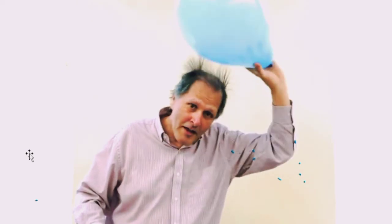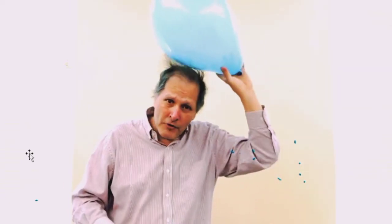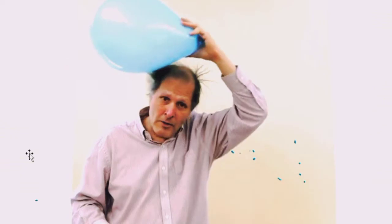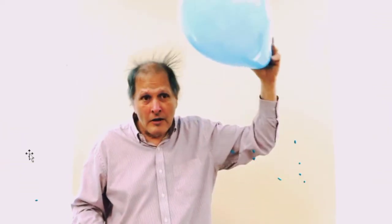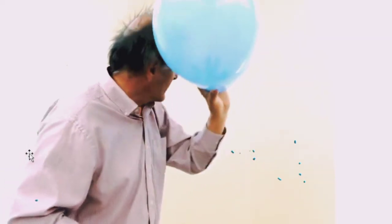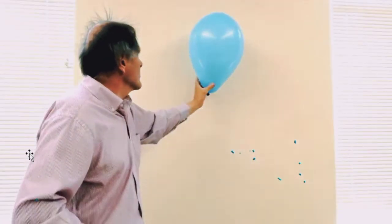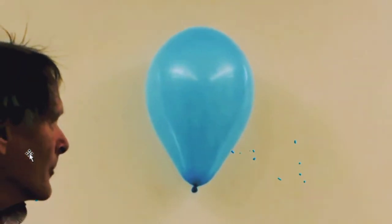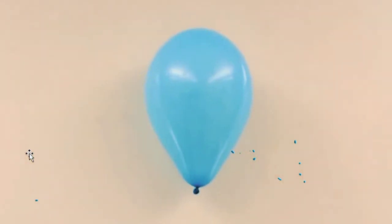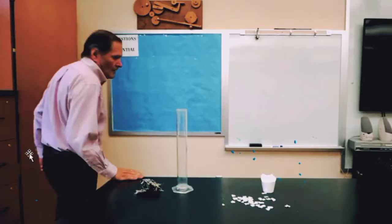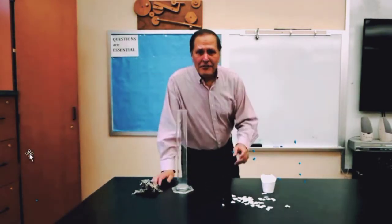Now the balloon is rubbed with the hair — the balloon is getting charged. There is electrostatic induction, so the hair is pulled by the charged balloon — a very interesting thing! Now we are going to fix the balloon nearby the wall. See the interesting thing: the balloon is attracted by the wall. Let us discuss the physics behind this later on.